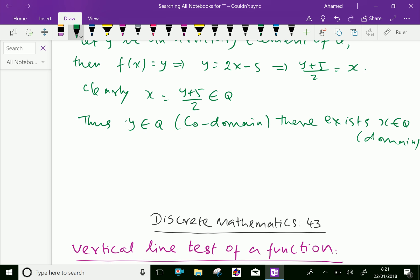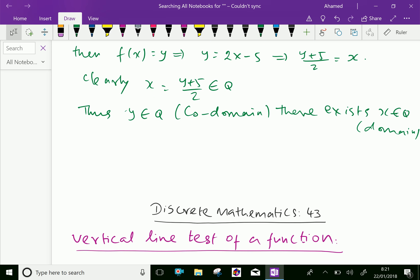From that, we can prove that f(x) = f((y+5)/2) = 2((y+5)/2) - 5.